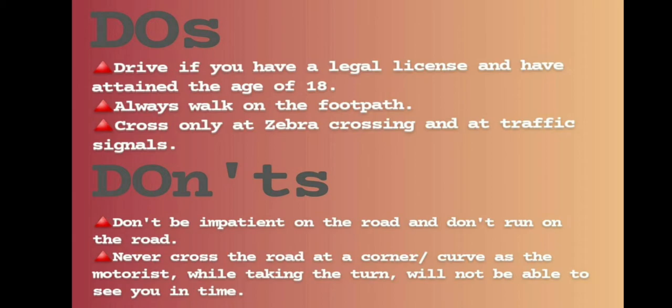Do's for road safety: Drive only if you have a legal license and have attained the age of 18. Children or those below 18 years should not use vehicles on the road. Always walk on the footpath. Cross only at zebra crossings and at traffic signals. These are certain rules which must be followed when you are using the road.